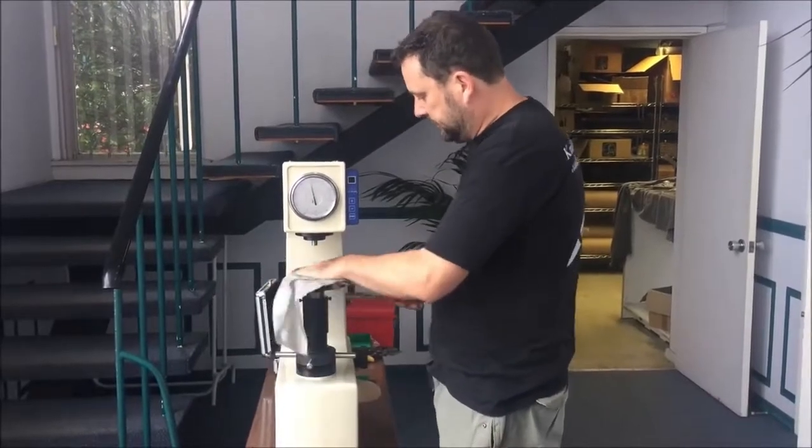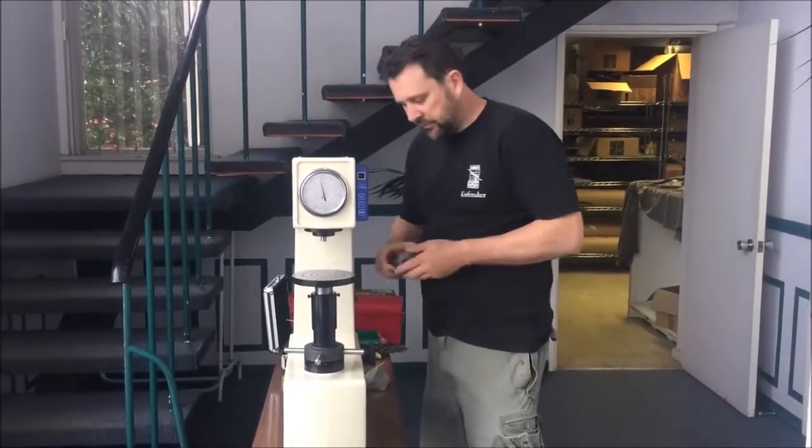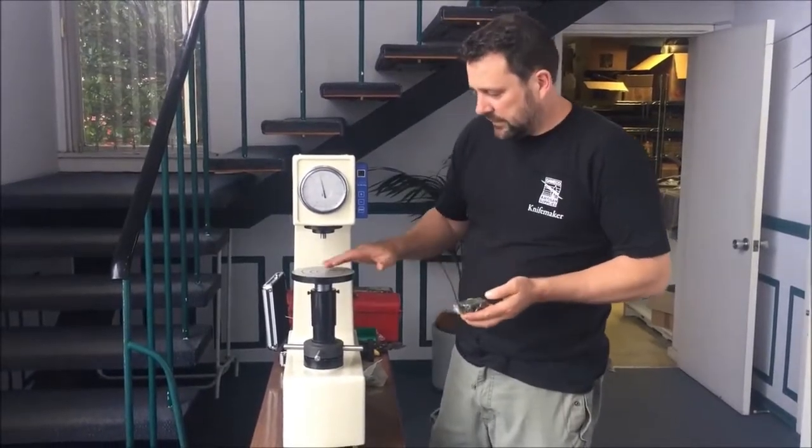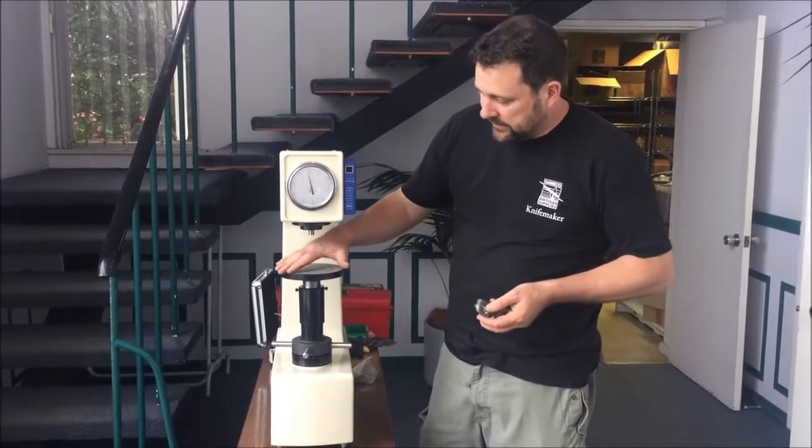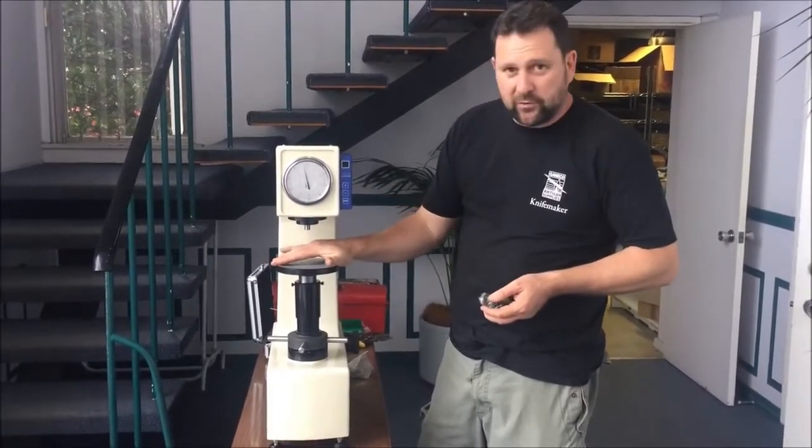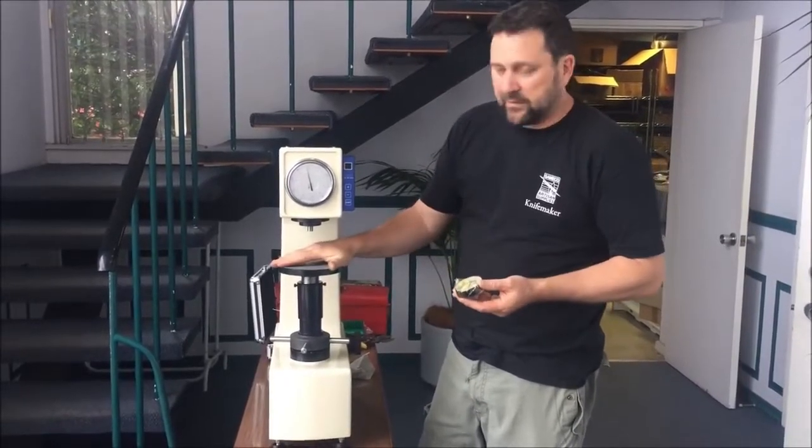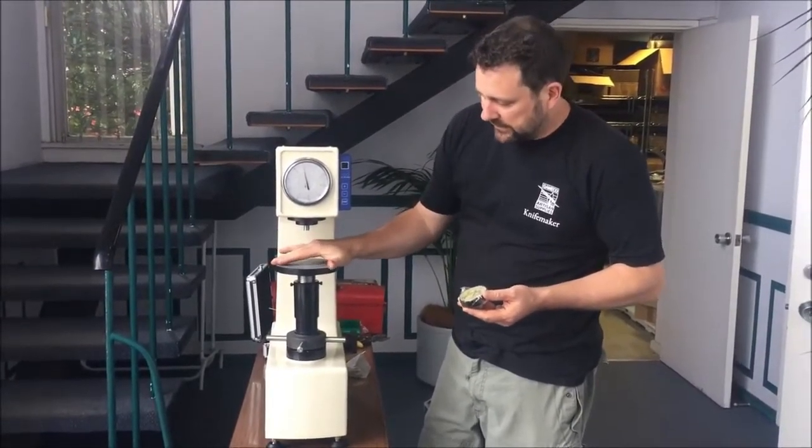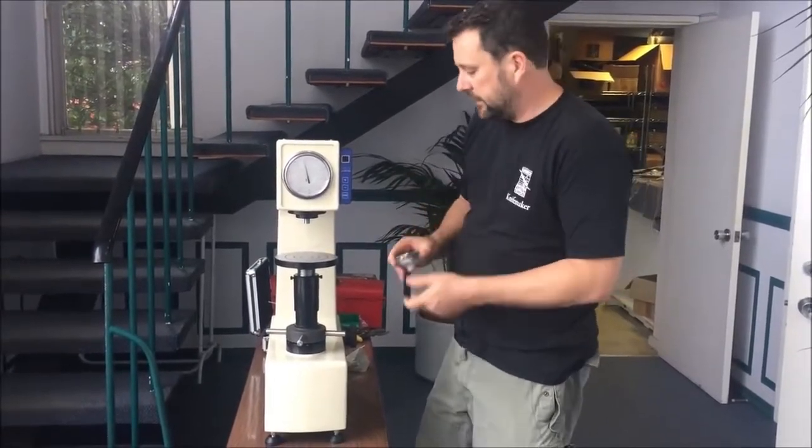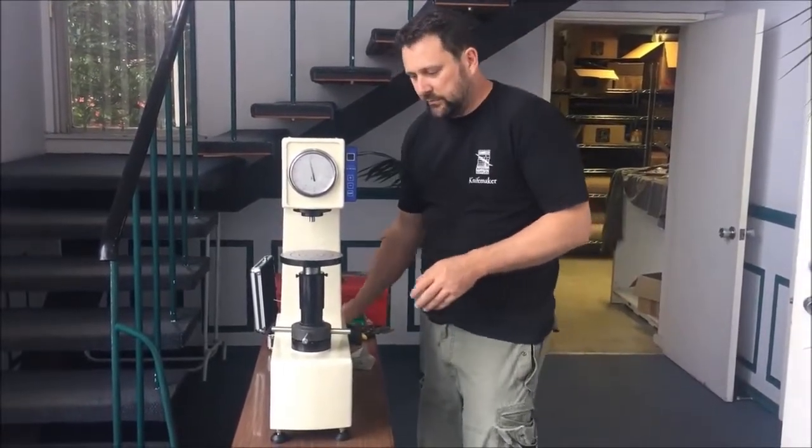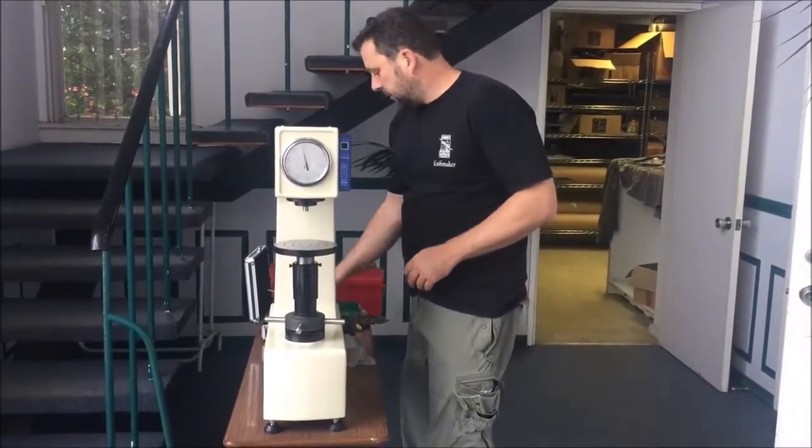Quick note on the anvils. For knife making I'd prefer this one, the smaller anvil, rather than the bigger one. Reason being is because we're testing other people's blades. If they've got a bit of a bow in them and it sits on the anvil like that, it'll read soft. If it's on a smaller anvil, it's much less of an effect, so you'll get more consistent readings. But that's okay, we'll leave the big anvil on for this.